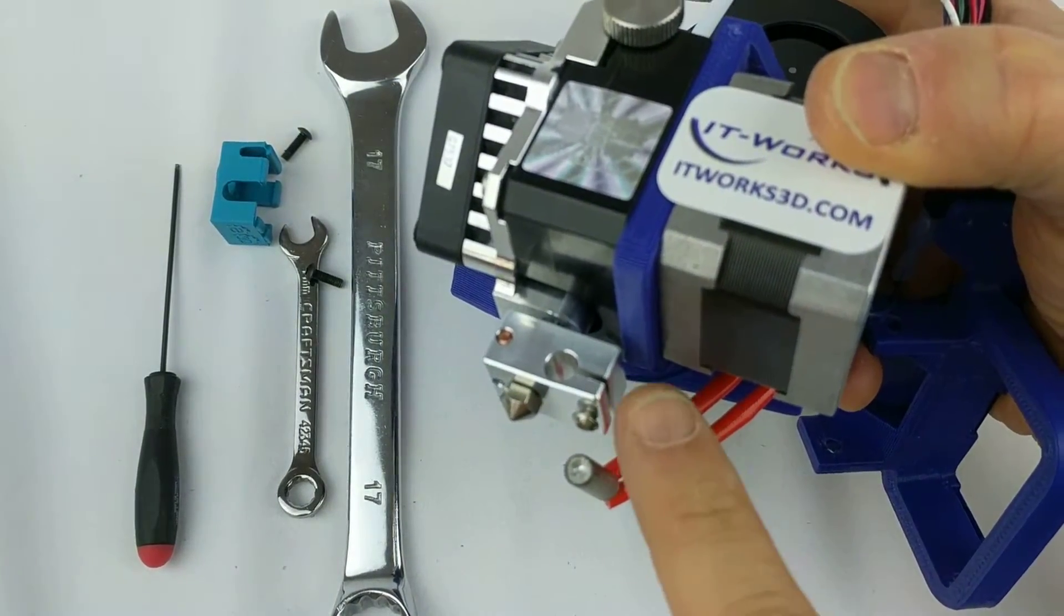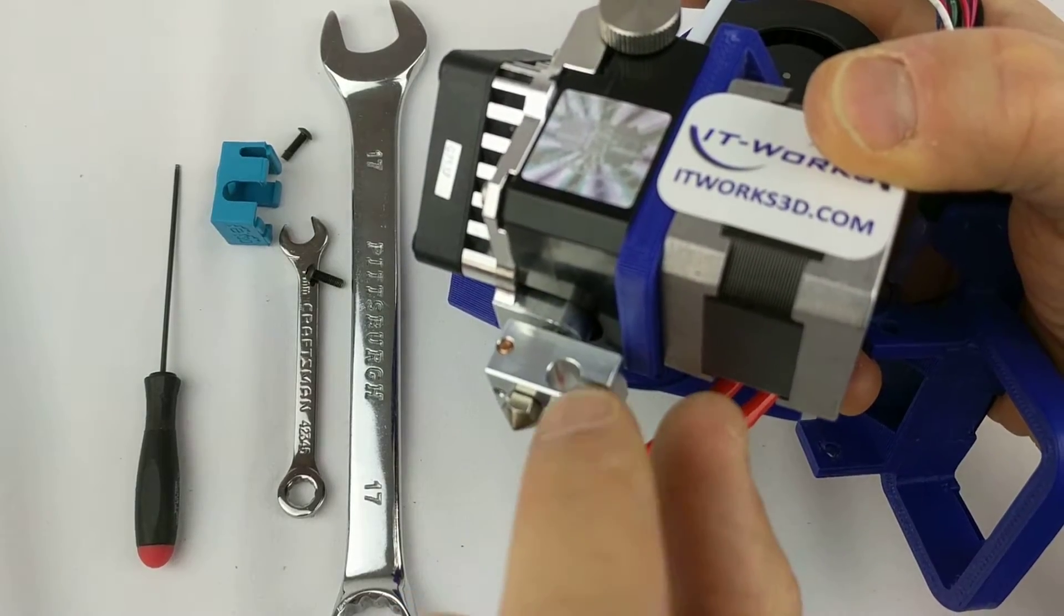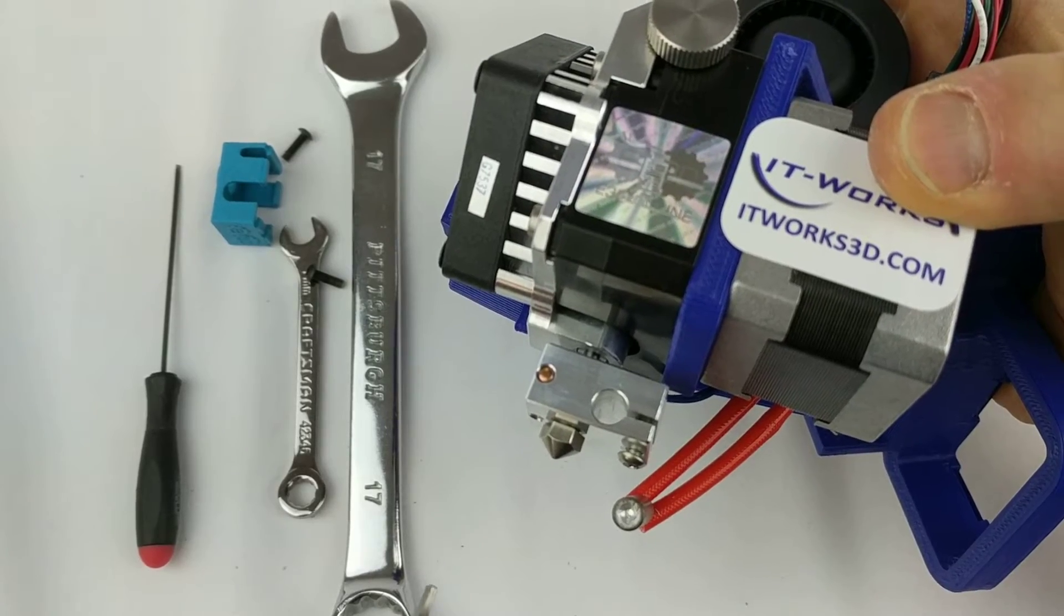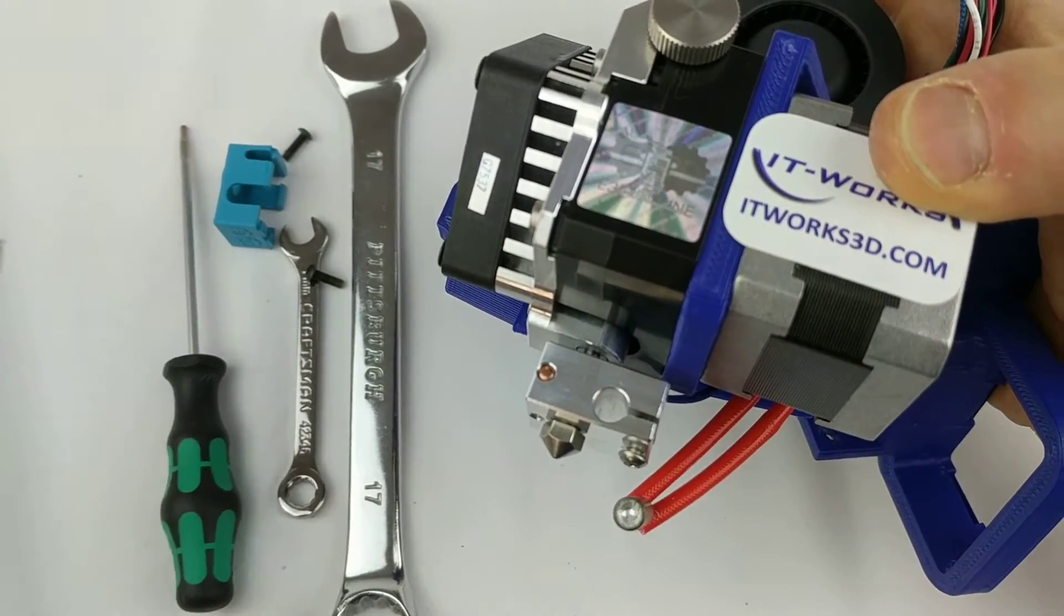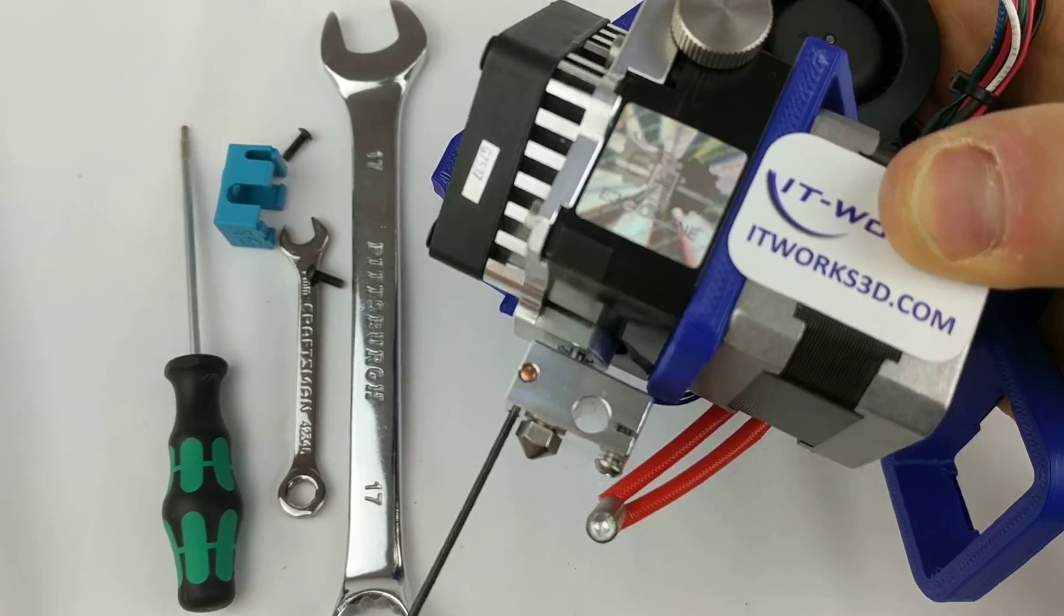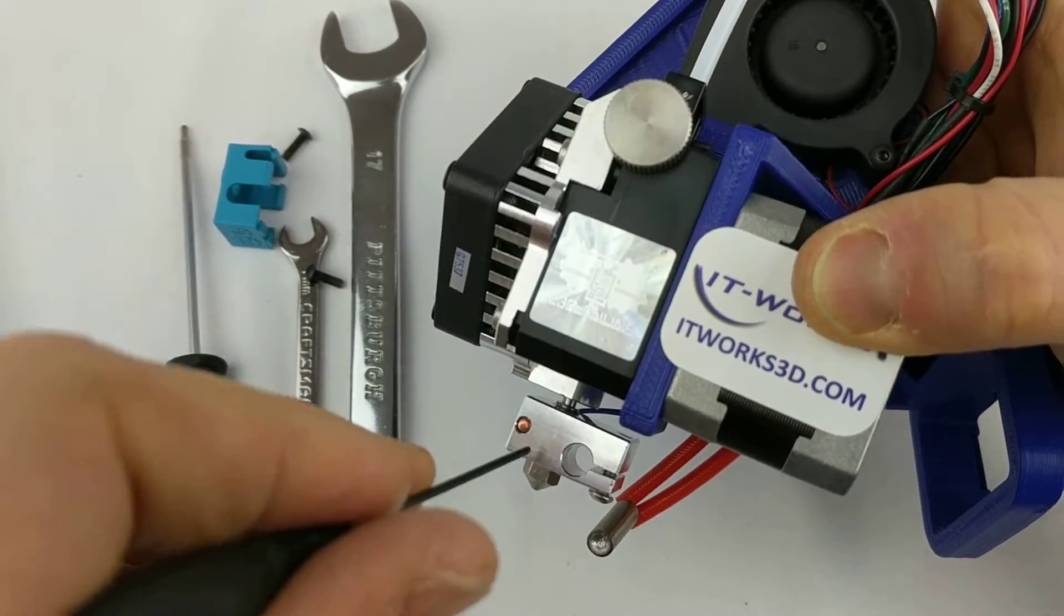Sometimes you need to put a knife or something in here and wrench this loose. This is aluminum, so it's pretty easy to bend. I'm going to take my 1.5 millimeter hex wrench and loosen the screw that retains the thermistor and push it out.